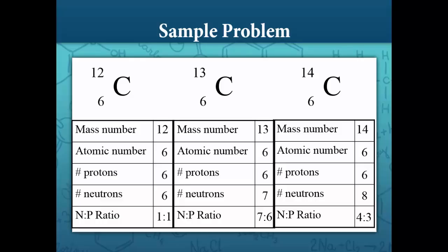Therefore the most stable of these three isotopes is carbon-12, since for nuclei with atomic numbers less than 20, the most stable neutron-to-proton ratio is 1 to 1.